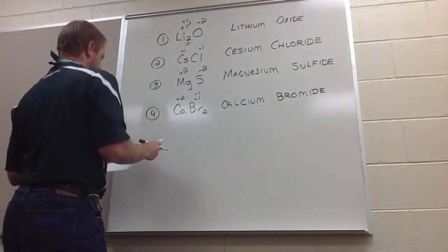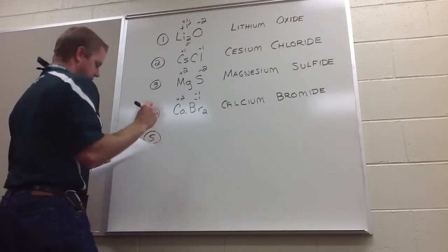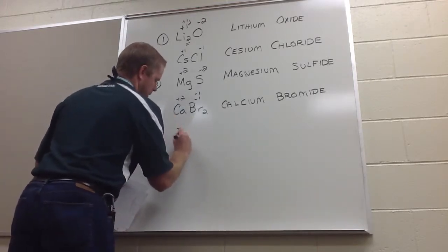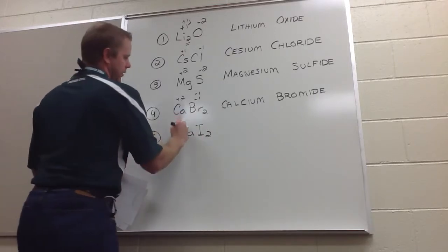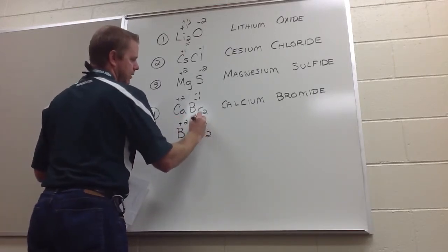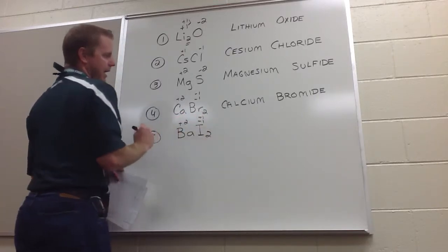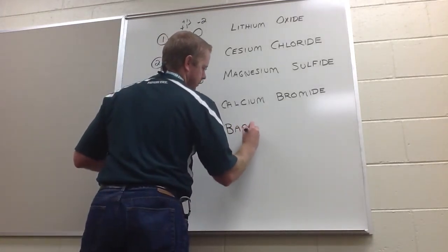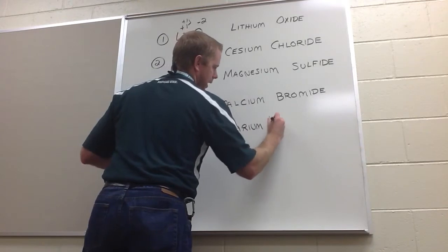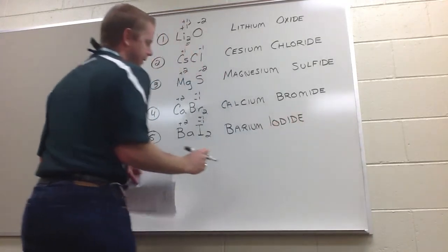And that's numbers one, two, three, and four. And let's do five, just so I can do five on both pages. BaI2. Pretty much the exact same thing as here. You have a plus two charge barium, a negative one, and a negative one iodine because they're halogens. So, this becomes barium iodide.